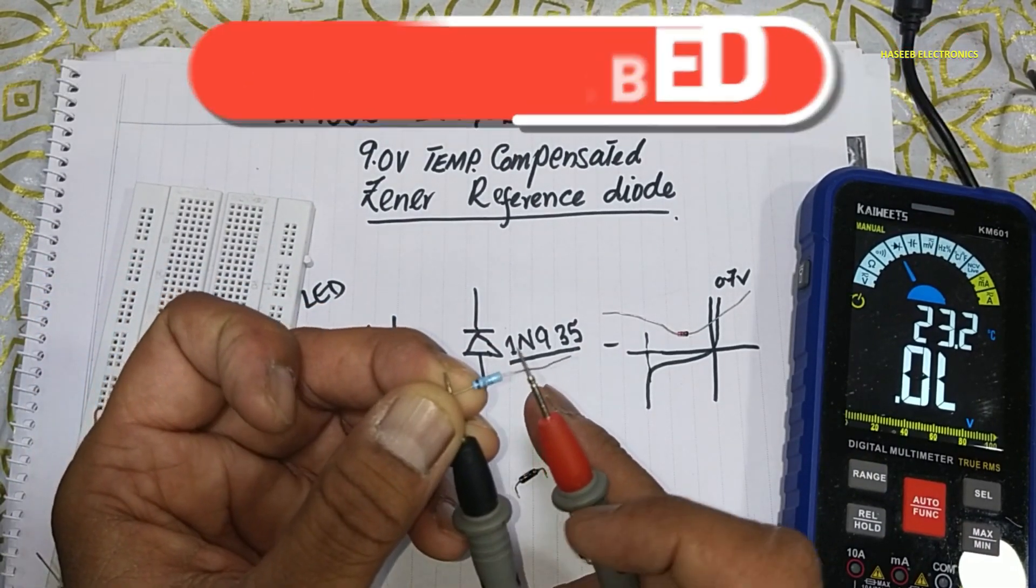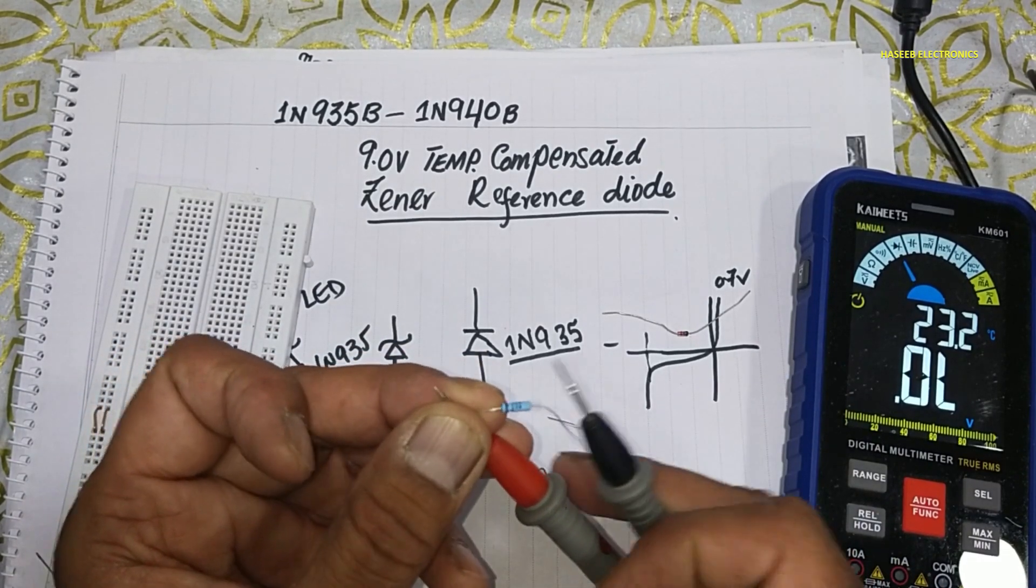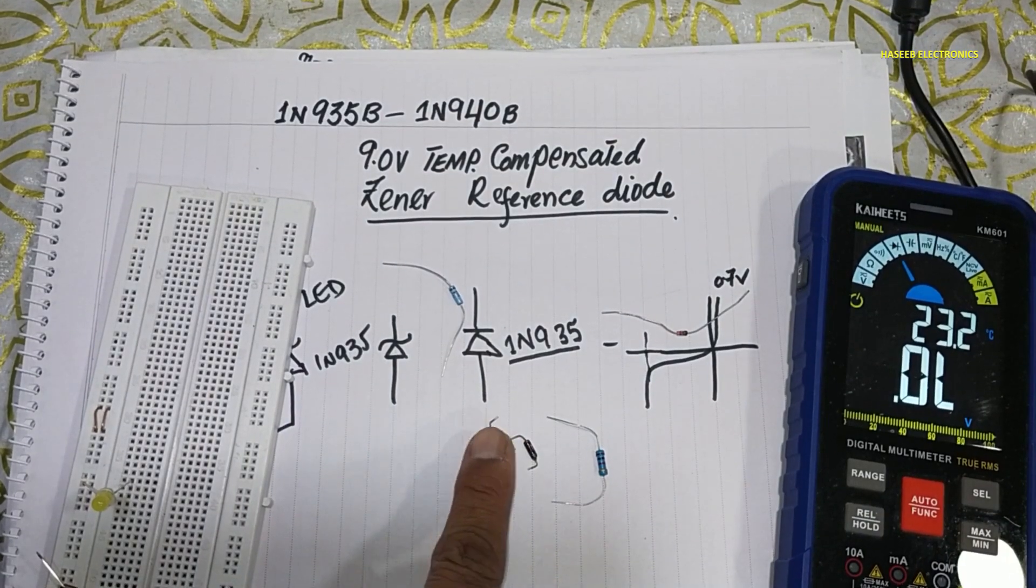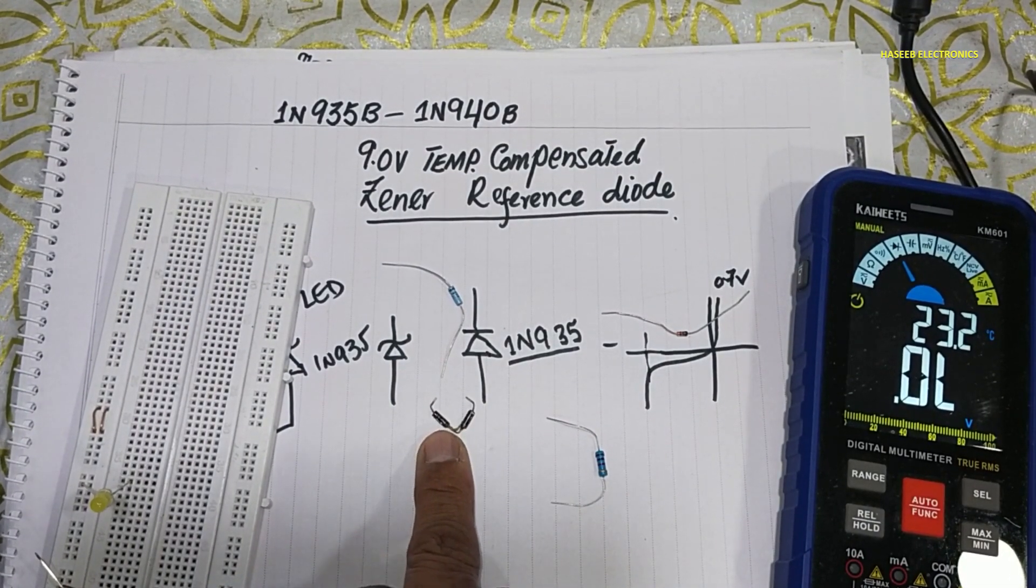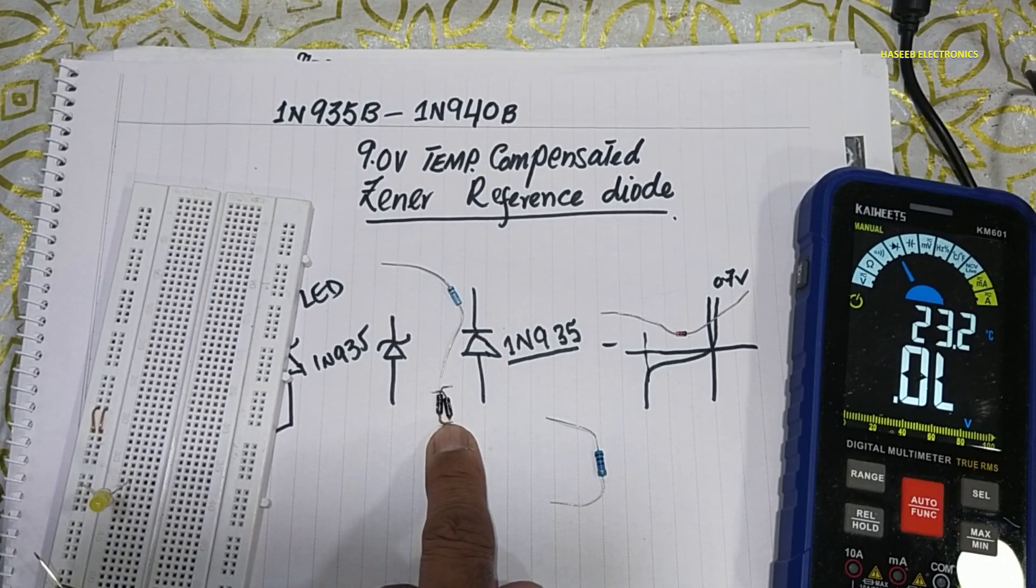We cannot test using multimeter. Basically I was working on a voltage regulator, 16 volt regulator. I found these two diodes bad in that circuit, so I am sharing how we can test it.